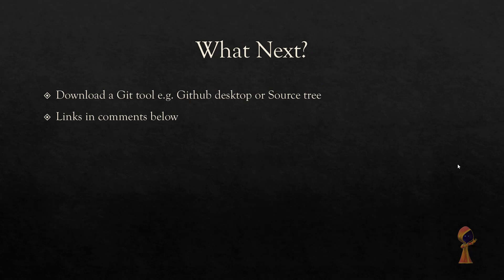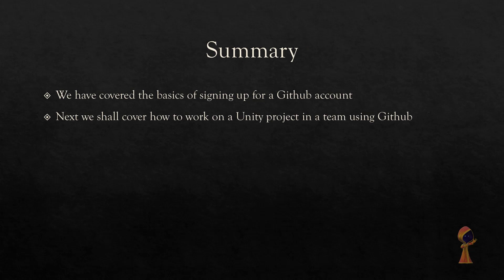Next we'll learn about downloading and installing a Git tool, which could be GitHub Desktop or Sourcetree — links for these are below. We'll also talk about how to actually set up your game project and work in collaboration with your team. We've covered the basics of signing up for a GitHub account and why it's especially good if you're a student — you can get a Unity student license via GitHub Student. Then we'll talk about how to use your GitHub account for working on a Unity project in collaboration, which is especially useful for people working from home with a team in different locations.